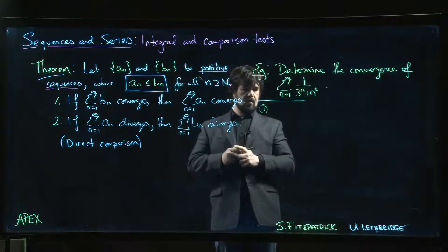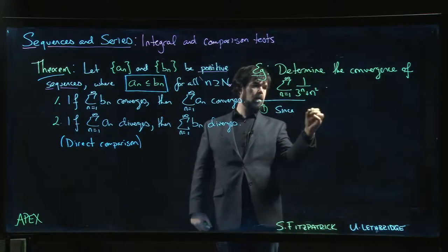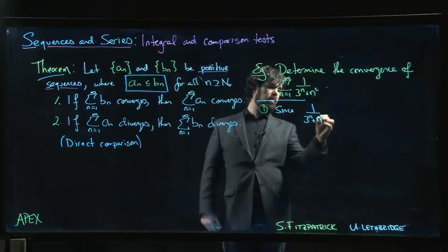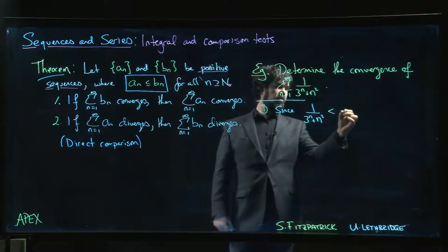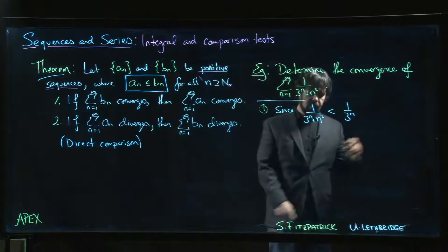We could say since 1 over 3 to the n plus n squared is less than 1 over 3 to the n. Why? Why is that true?